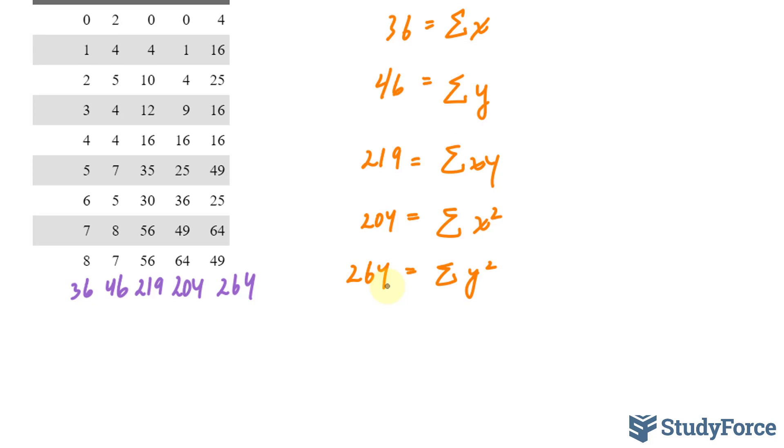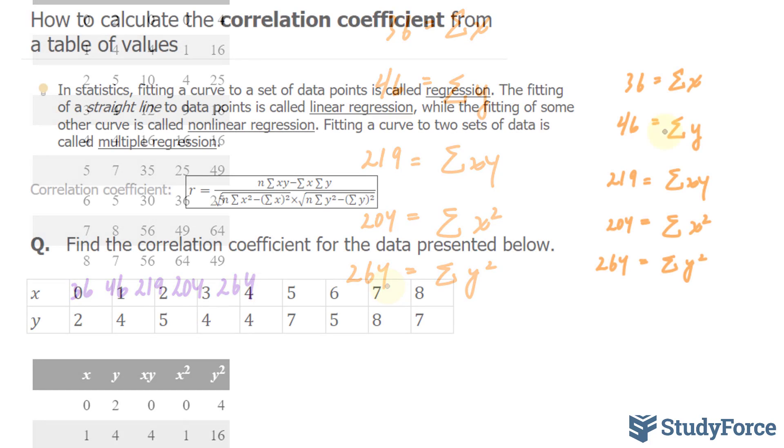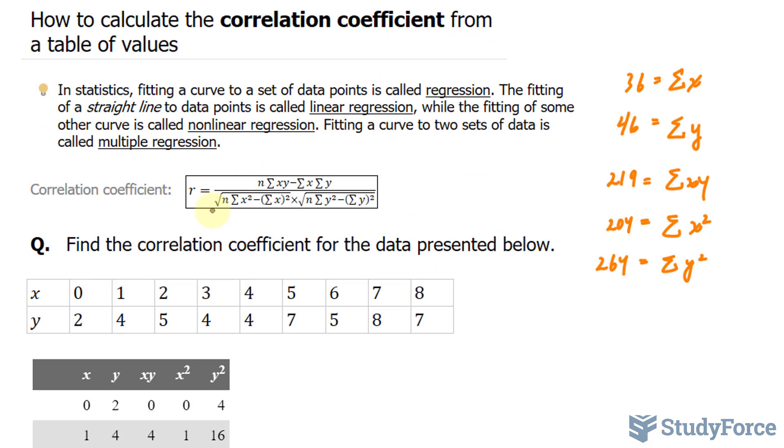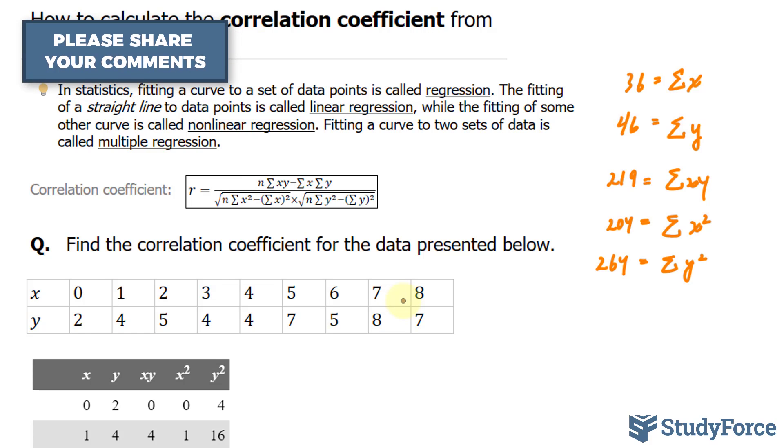Our next step is to substitute these values into the formula. The only thing that's foreign in this formula that we haven't defined yet is n. n represents the number of observations. In our case, we have 0 through 8. That represents 9 observations.